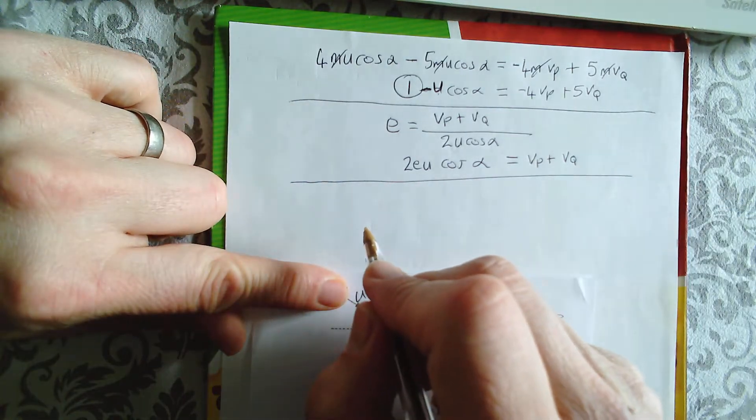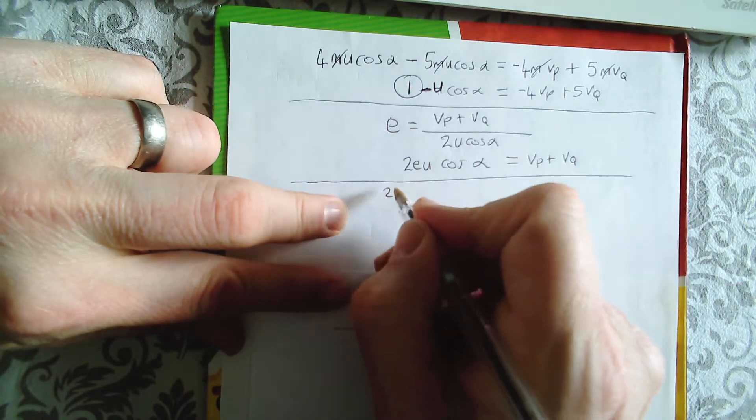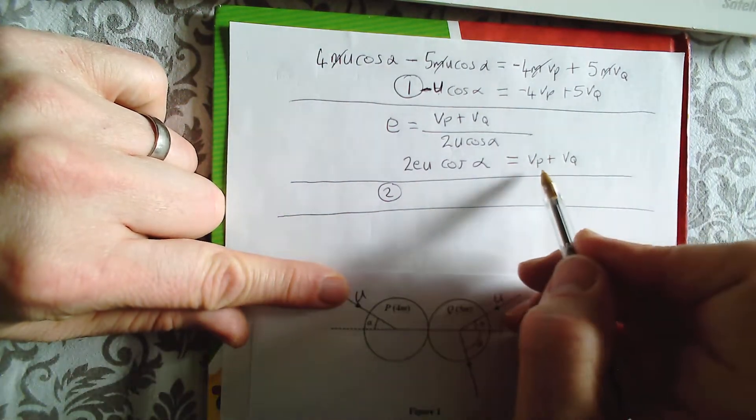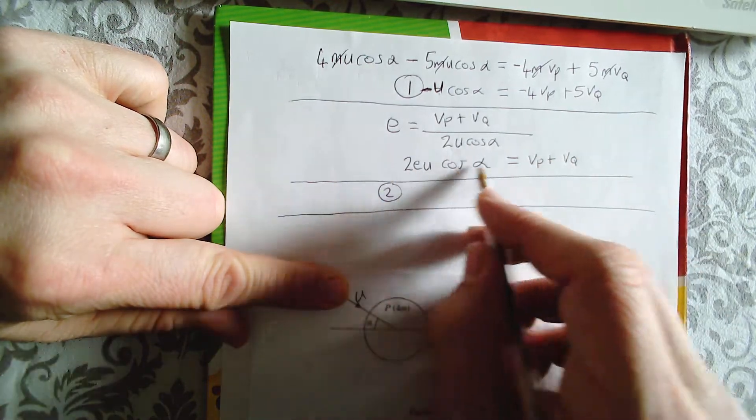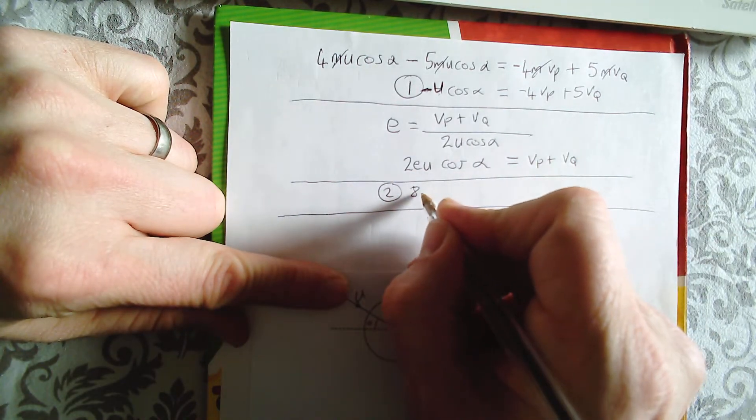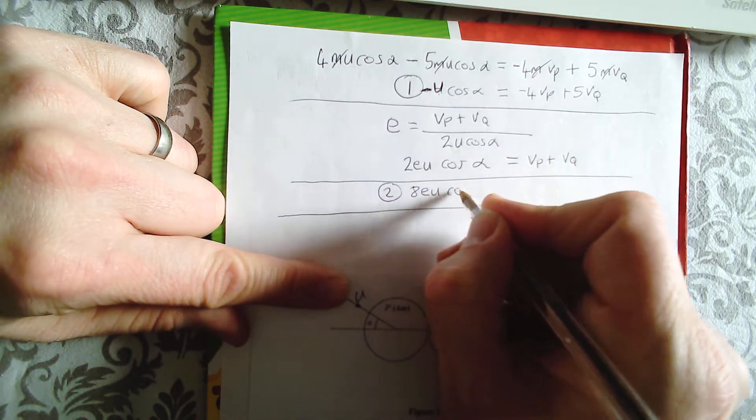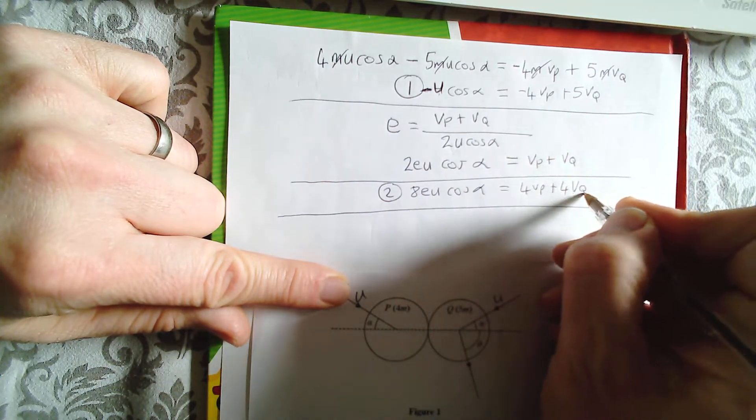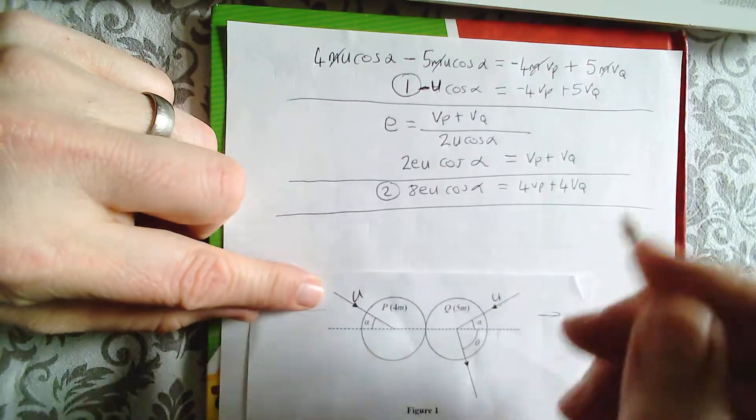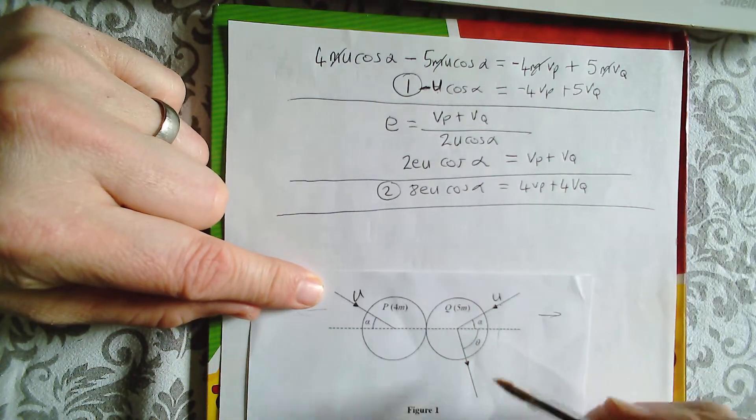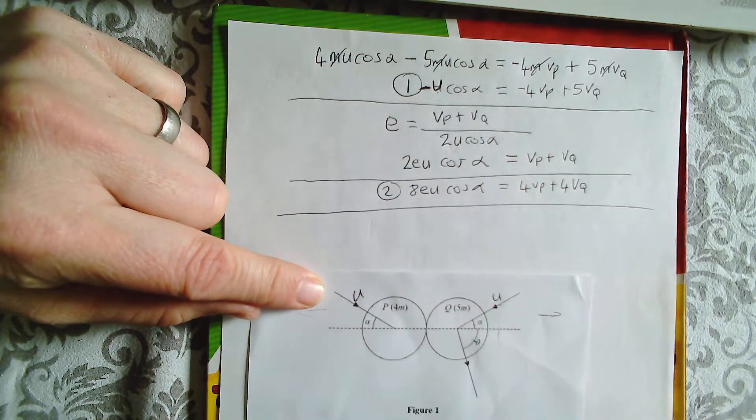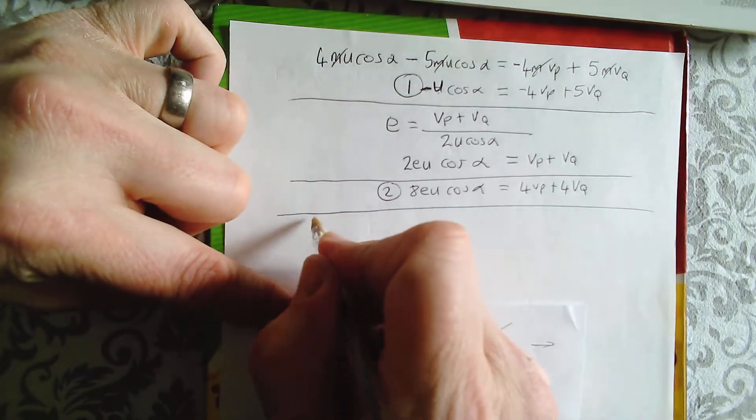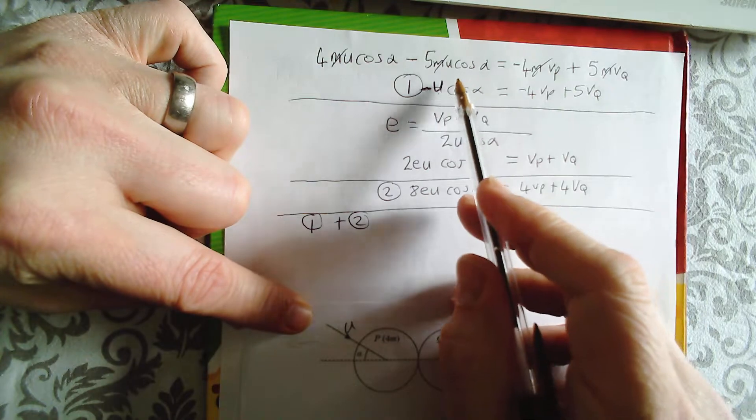So hopefully that's made a bit of sense. But what I do want to do is create an equation, equation 2. And you'll see why I do this. I want to get rid of this Vp. So I'm going to multiply all of this by 4. So I get 8 EU cos alpha equals 4 Vp plus 4 Vq. So we're going to need Vq. We're basing the whole thing about Q because we know more about Q, we have this bit of information here. Now, if we do this, we do this by saying 1 add 2. So I've got that, add that.